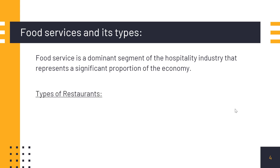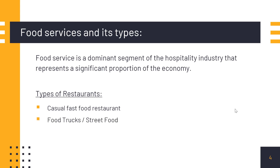Now, the types of restaurants. I have categorized them into general categories. First is casual fast food — places like Burger King, McDonald's, and KFC. They serve food very quickly and at comparatively cheap prices relative to fine dining restaurants.